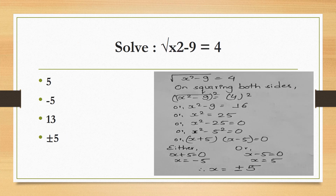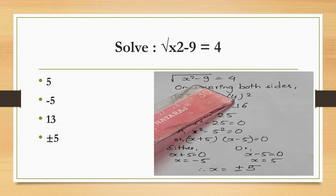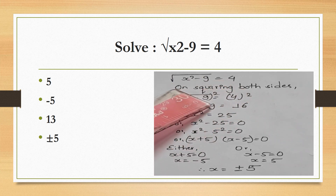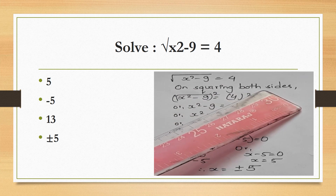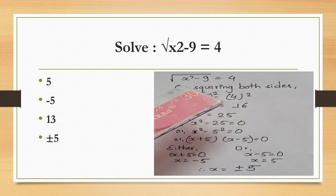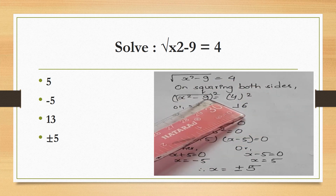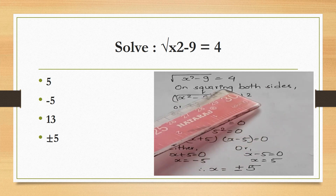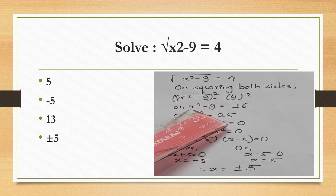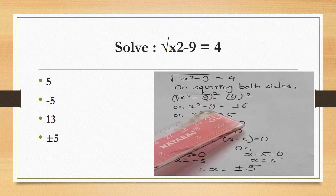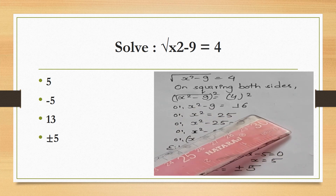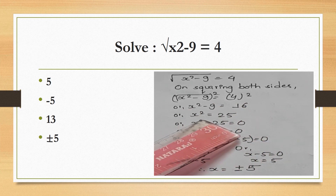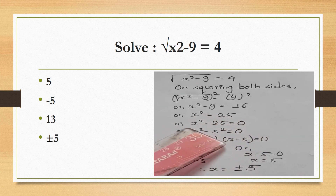Solve: √(x² − 9) = 4. Squaring both sides: x² − 9 = 16. Therefore x² = 25.